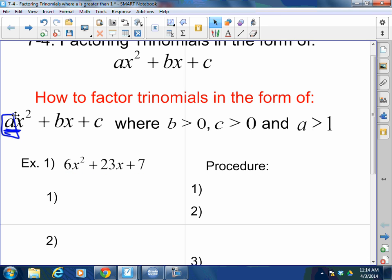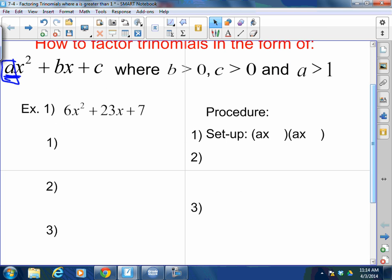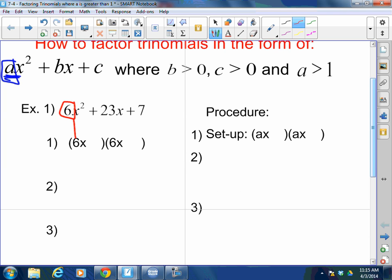So step 1, your setup. Just like last time, remember how last time you put x and x? This time you are going to put ax, ax. So you are going to have 6x, 6x. 6 is your a. Please put them in both. I know what some of you are thinking. Morrill, you are wrong. 6 times 6 is 36. I know. Trust me. It is a trick. I promise you, you are going to love this.